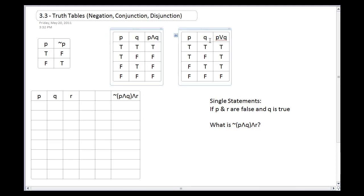In section 3.3, we talk about truth tables built with disjunction. Again, there are P's and Q's, so two possibilities for each — two times two gives four possibilities total. I set up the columns the same way: P goes true, true, false, false, and Q alternates true, false, true, false, giving every combination.